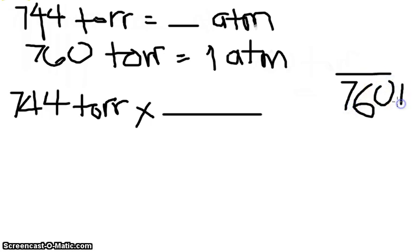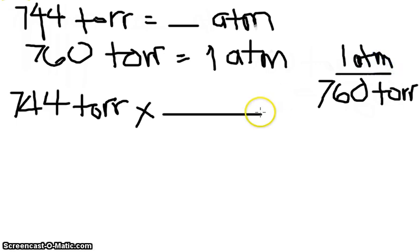So, the 760... Sorry, the space is not enough. Let me just erase that. And, we have 760 Torr per 1 Atmosphere. Alright. We write that here: 760 Torr in 1 Atmosphere. Okay.